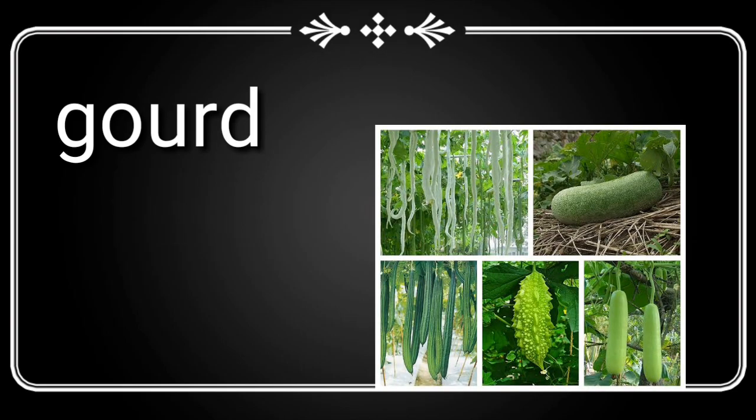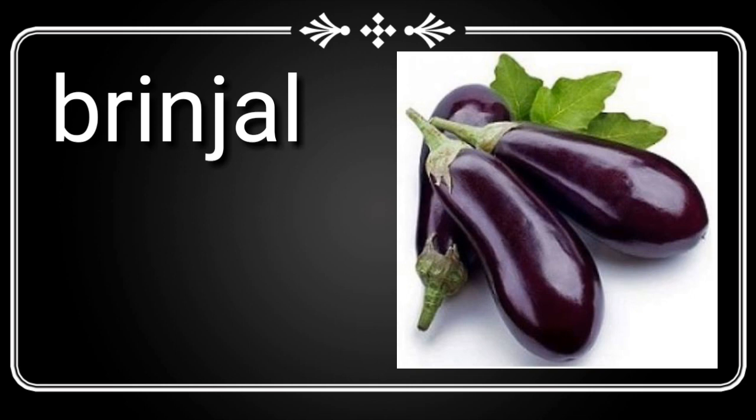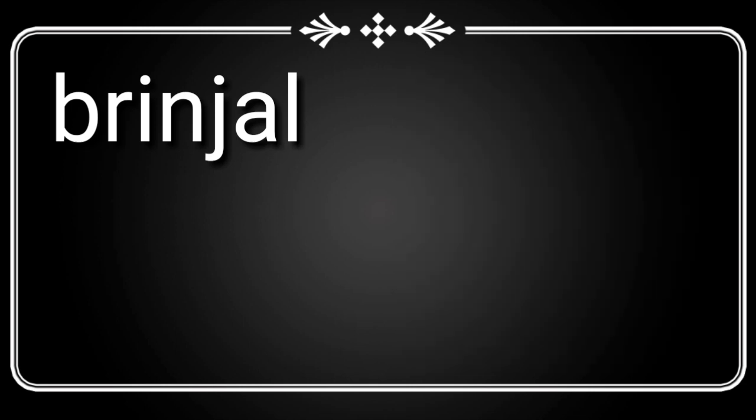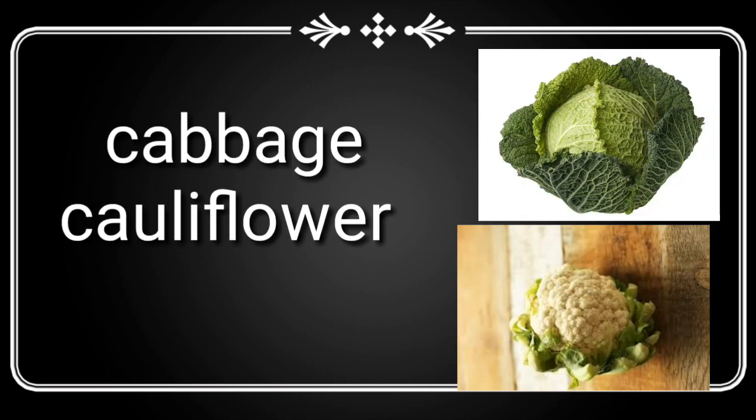The second word is gourd — G-O-U-R-D. Next, brinjal — brinjal means baingan, B-R-I-N-J-A-L. Radish — mooli. Then cabbage and cauliflower: cabbage is used for bandh gobhi, and cauliflower is used for phool gobhi.